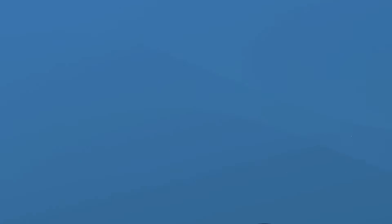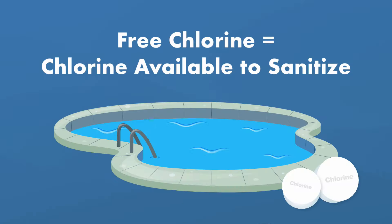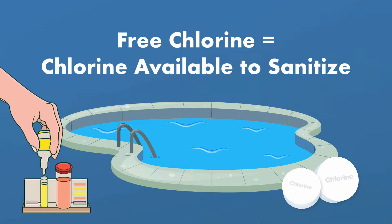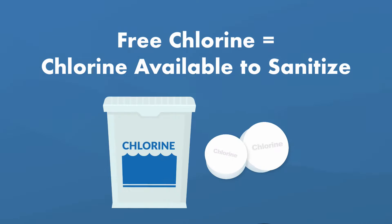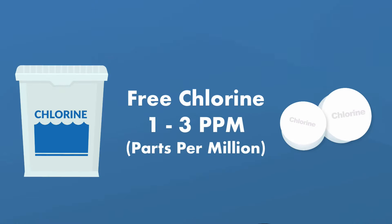Why is it called free chlorine? This is the chlorine that's free, or available, to sanitize your pool water. This is what you test for before making adjustments to your pool water chemistry. And when you add chlorine, you're increasing the amount of free chlorine in the water. You want to aim between one and three parts per million, with three parts per million being ideal.